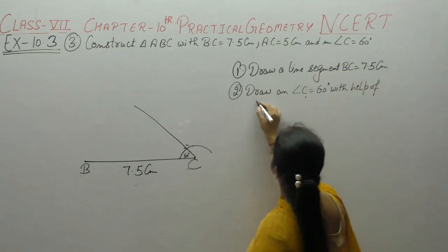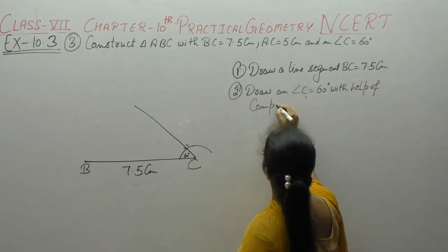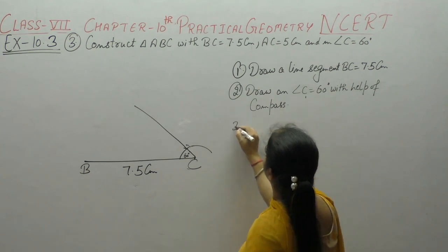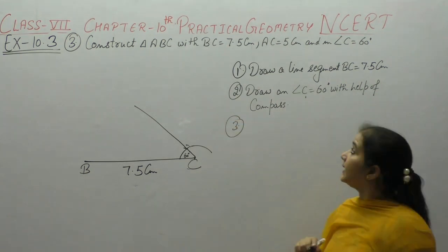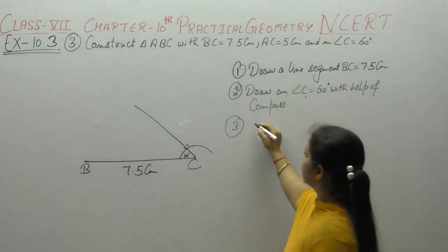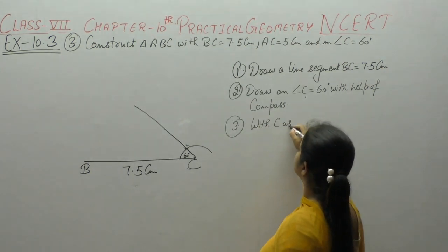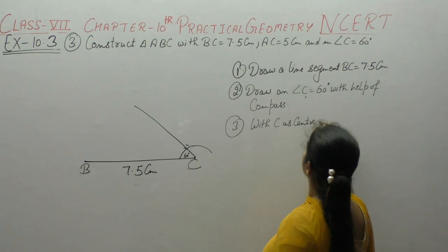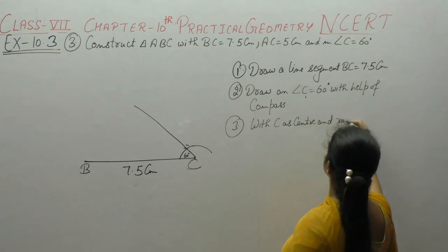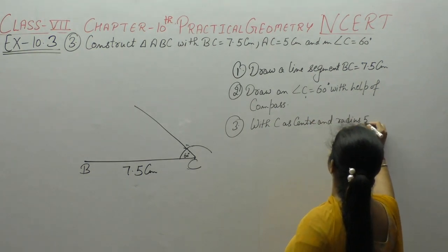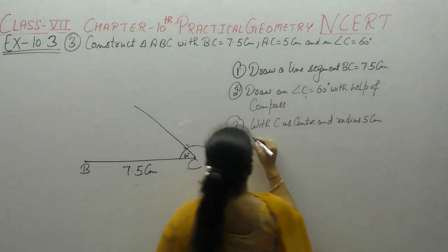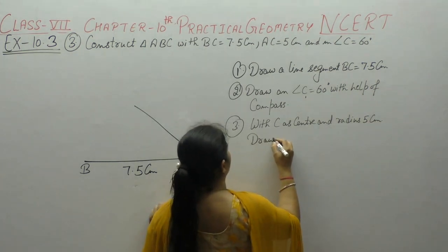Now next, AC is 5 cm. With C as center and radius is equal to 5 cm, draw an arc.